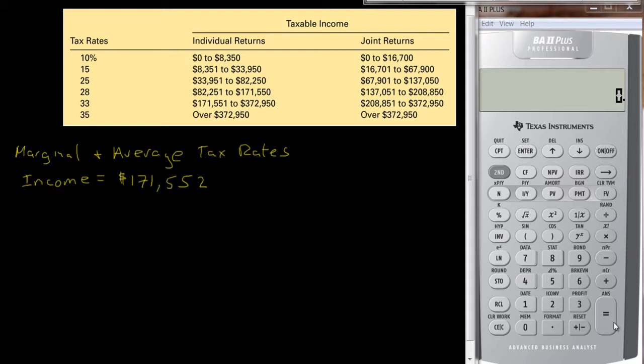The way the system works is that we have this marginal tax rate system. That is, you get taxed at certain amounts on certain amounts of income. So if we look at this table here, this is from a 2009 U.S. income tax table. And you notice there are two columns here, one for individual returns and one for joint returns.